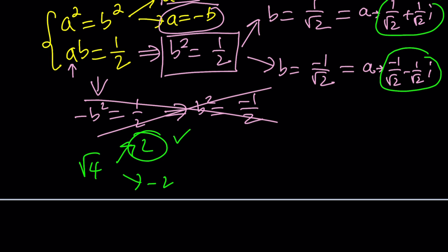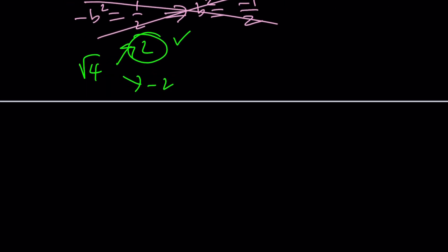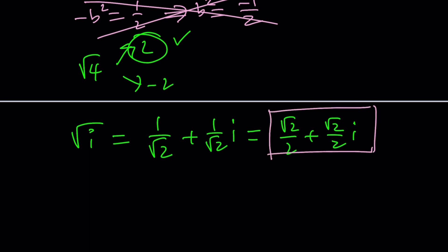So here, which one are we going to take? Probably the one with a positive real part, which is the first one. So 1 over root 2 plus 1 over root 2i is the principal square root. You could also write this as root 2 over 2 plus root 2 over 2i. And when we do the second method, hopefully you can refer back to this.